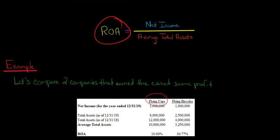Now, we see that for Flying Cars, the ROA is 10%. So basically, if you took one million and divided it by 10 million, you'd get 0.1, which is equivalent to 10%. So we convert that to a percentage. The return on assets for Flying Cars is 10%.